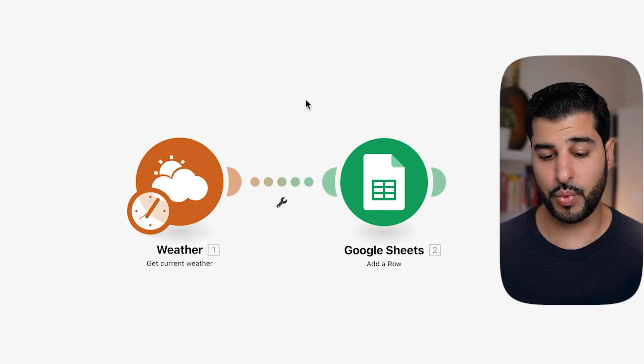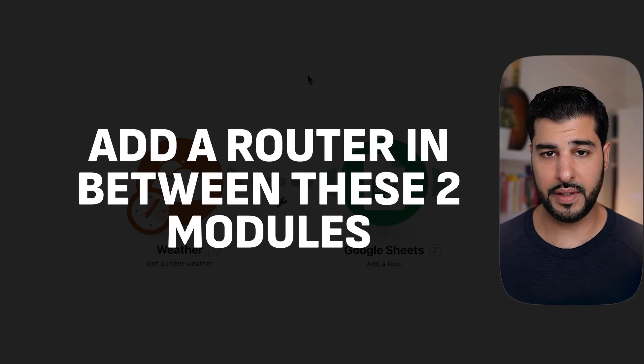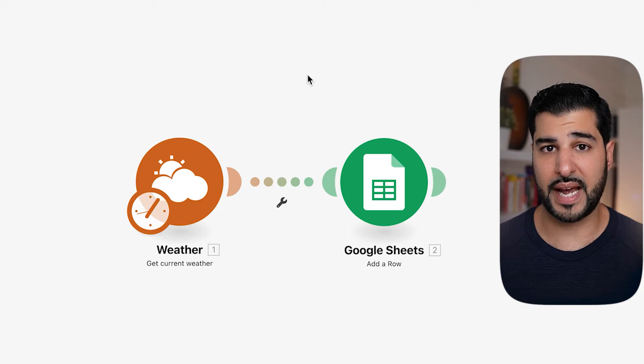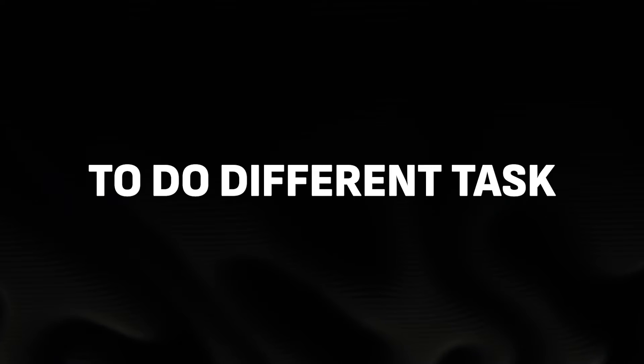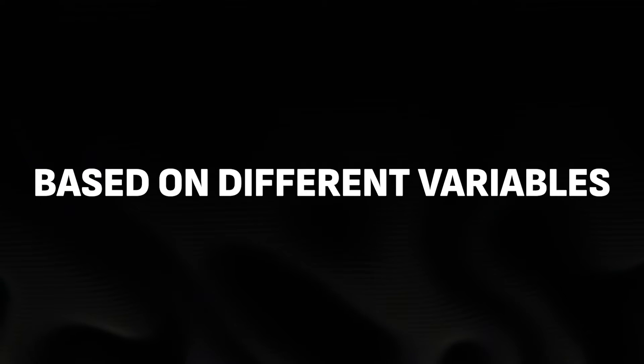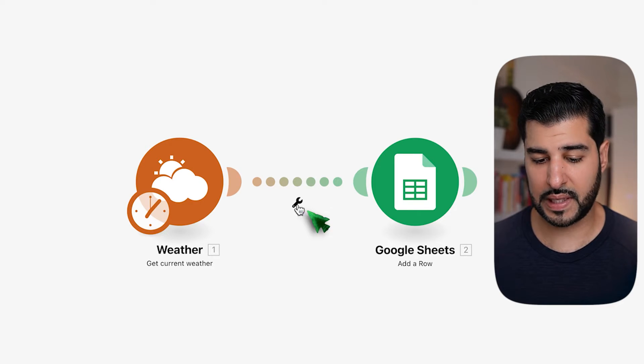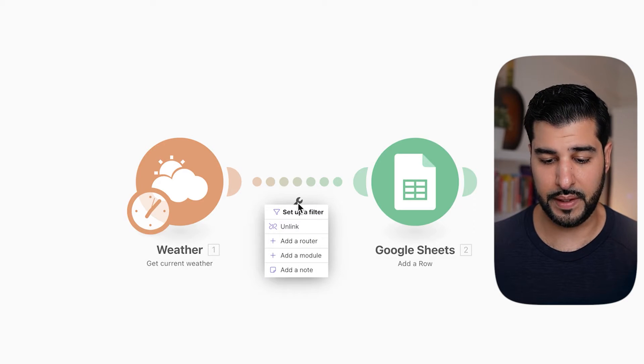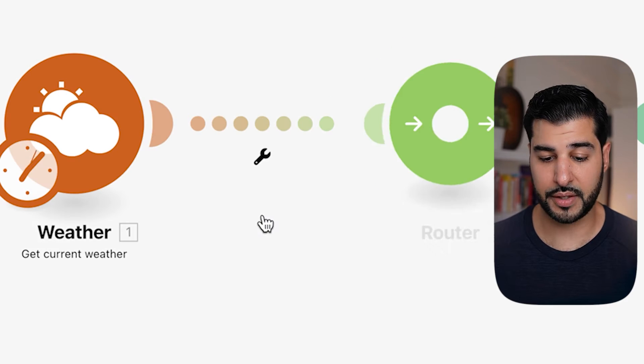What we're doing next is we're going to add a router in between these two modules to take different actions based on variables. What that means is we can program Make to do different tasks based on different variables. So let's take temperature for example — if we want it to take a certain action when the temperature is above 20 degrees Celsius, we can do that, and the same if it's below 20. Click on the little spanner in between the two modules and click Add Router.